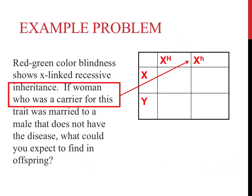Just as we did for codominance problems, you should put the alleles as superscripts on the X-chromosomes. As a superscript of the X-chromosome, you should have one capital H and one lowercase h for this individual, since she is heterozygous for the trait.